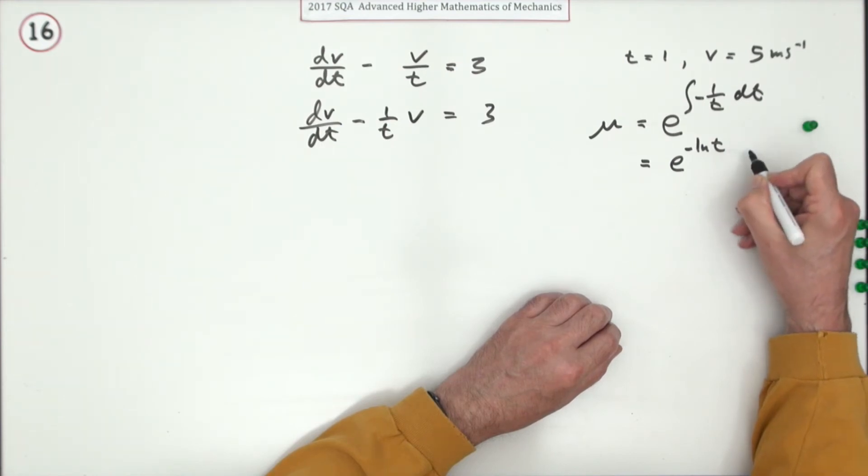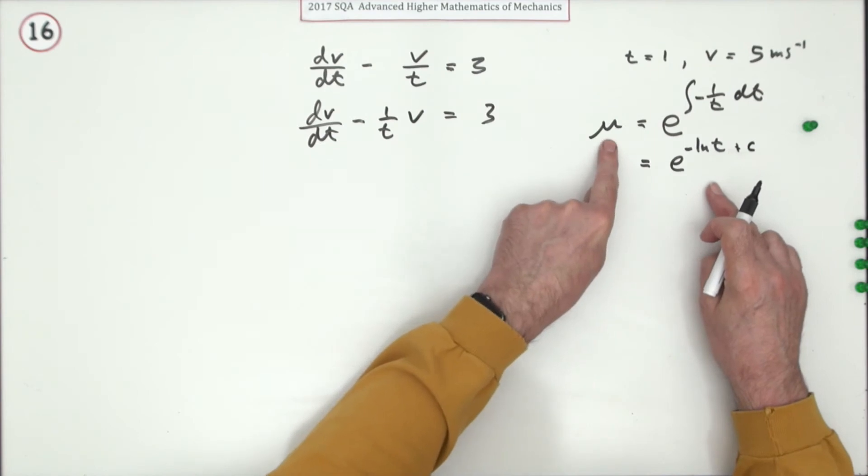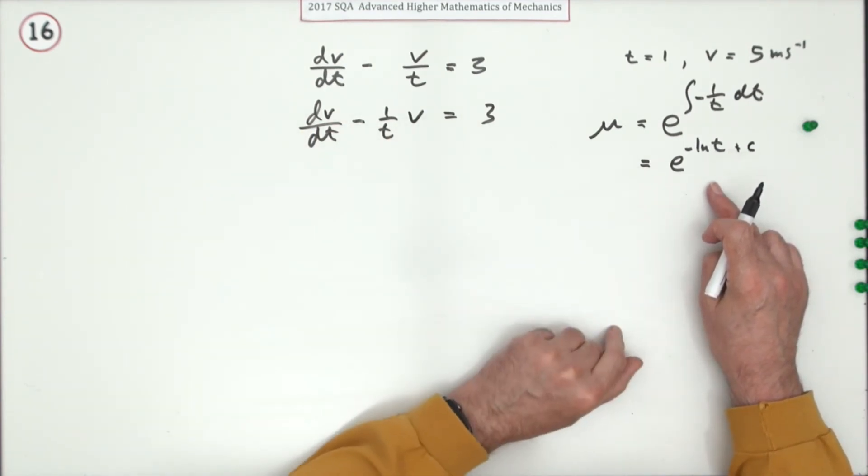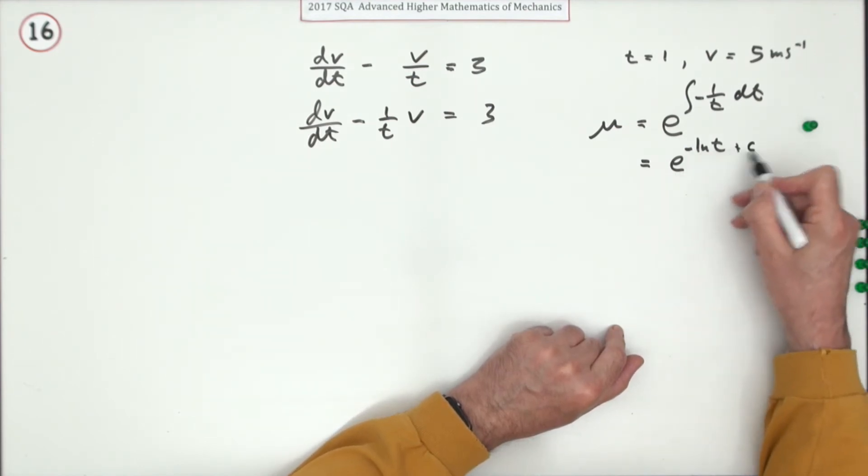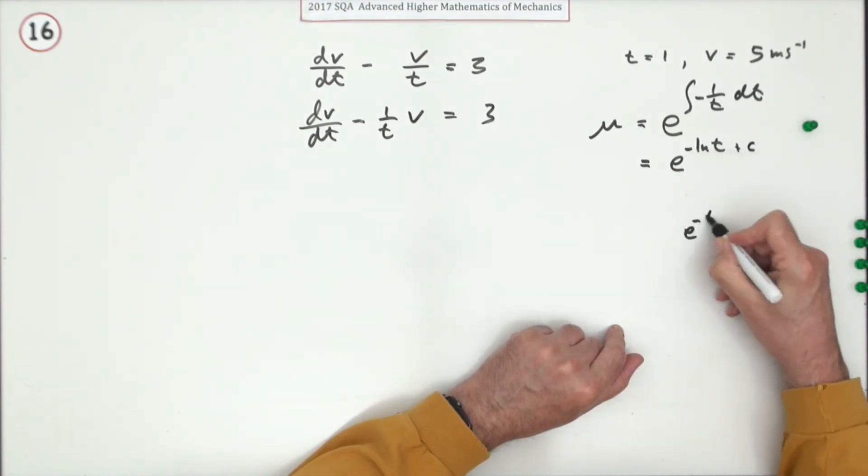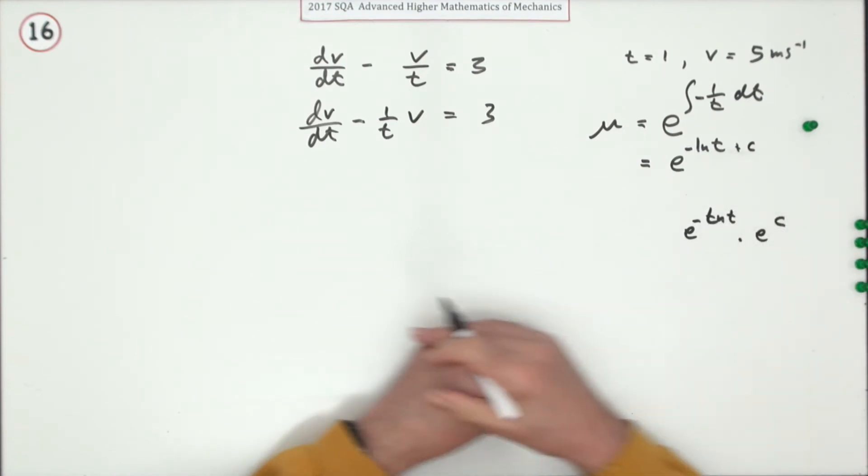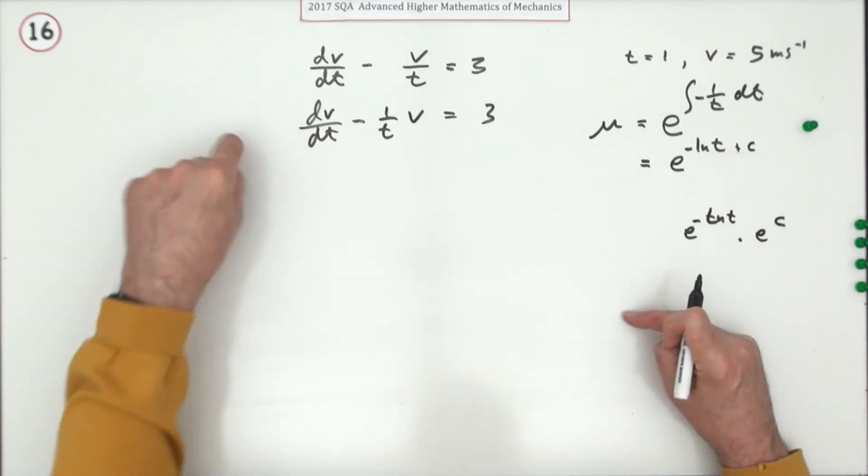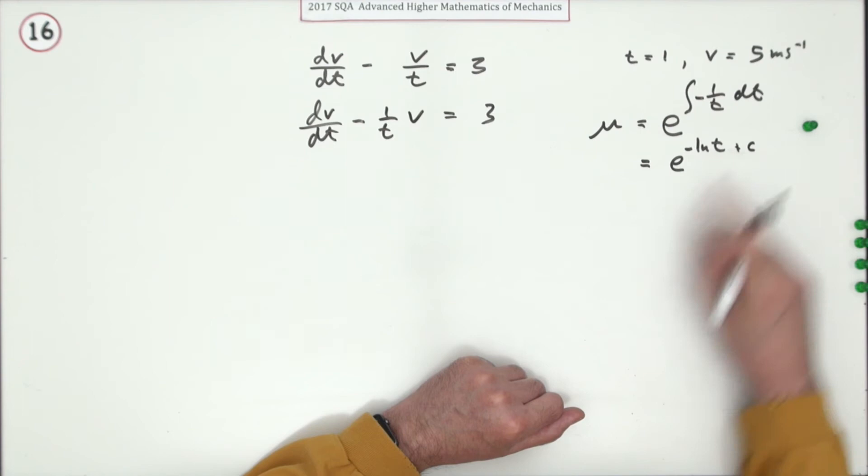Now you may well say, why not put it plus c? You could put plus c if you liked, but it's going to be an integrating factor—all three parts are going to be multiplied by it. If you've got e to the something plus something, that's the same as e^(-ln(t)) times e^c. So when you multiply by that factor, all those c's will then just cancel out again afterwards, so there's no point having it.